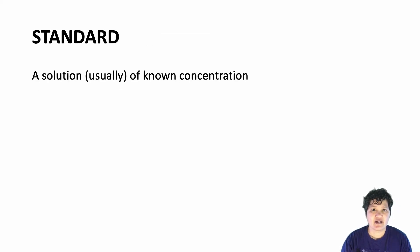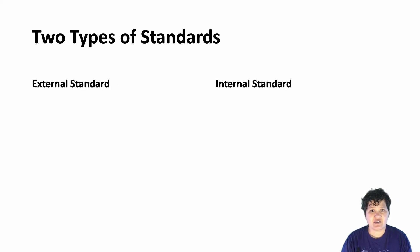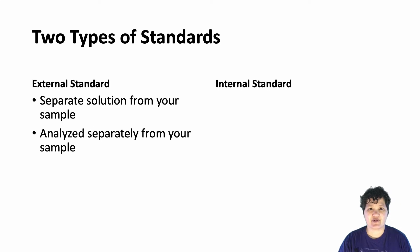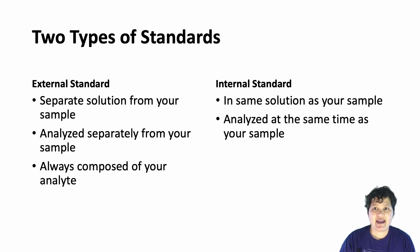Now let's talk about standards. A standard contains a known amount of your analyte. Often these are in solution, so we usually are going to be talking about concentrations of analytes in a standard. There are two types of standards, external standards and internal standards. External standards are made up separately from your sample and also analyzed separately from your sample. External standards are always just solutions of one or more analytes that you want to look at. Internal standards are added directly to your sample and therefore are analyzed at the same time as your sample. Internal standards may contain your analyte or they may contain something that is similar to your analyte.